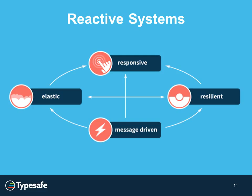One of the missions of TypeSafe is to provide tools, philosophy, and patterns to help you do that. If you're familiar with the notion of a reactive system — at the pinnacle of these four pillars is the notion of responsiveness. Responsiveness is the most important thing to a customer. They want whatever they're consuming to be responsive. However, responsiveness relies on the ability to be elastic and resilient.